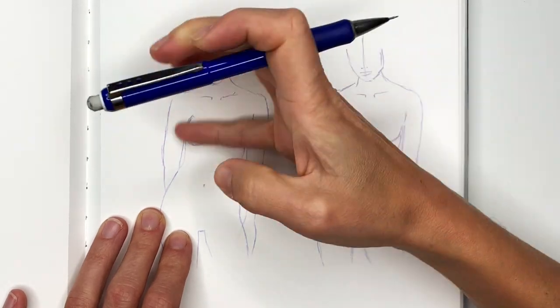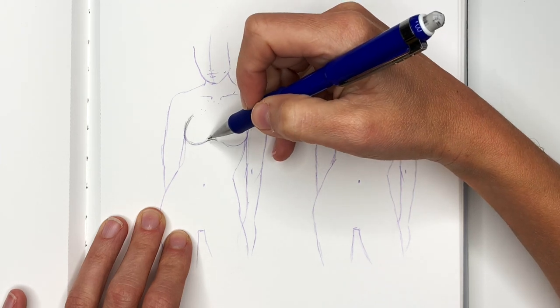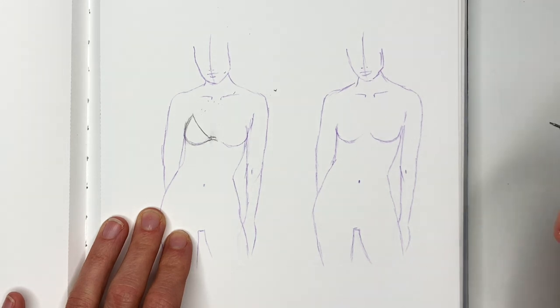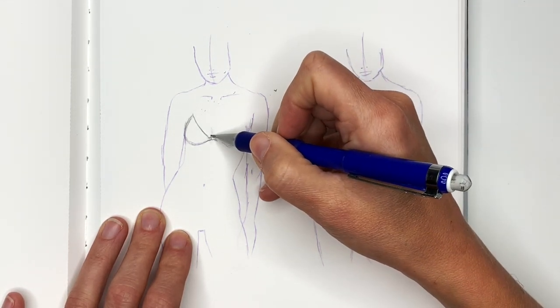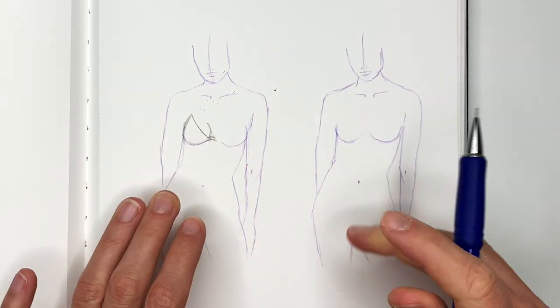So angle your bathing suit top depending on the final effect you want to get. I'm going to make mine pretty open and daring. Now if you want to show that there is more breast here, you just need to add little arches and that will show more volume.